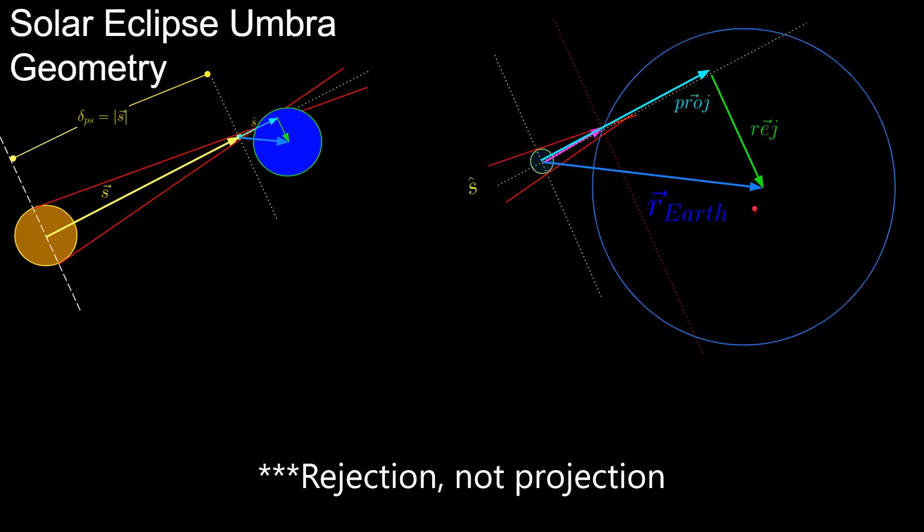It's the same situation for Umbra, and note that the projection scalar minus Earth radius can actually be a negative number, which means the entirety of the eclipse cone is being projected onto the sphere.